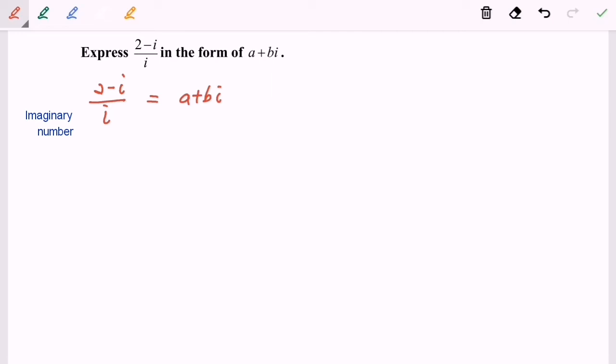So what we have to do is rationalize it so that for the left-hand side, the denominator will be a real or rational number. So how to rationalize it? We have to multiply with the conjugate, or we can say i only.